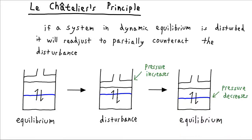Dynamic equilibria are kind of interesting because they're dynamic. There's stuff constantly going on, and if we do something to perturb our system, because there's something going on, we're going to affect those ongoings and we're going to get a response. There's a guiding principle called Le Chatelier's principle which is going to help us to predict what sort of response we're going to get. What Le Chatelier's principle says is that our response is going to be to partially counteract the disturbance in some way.